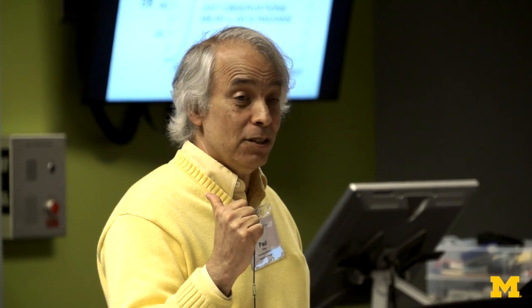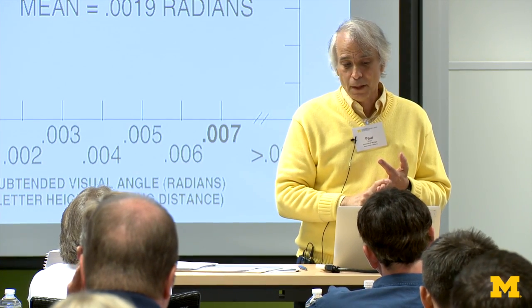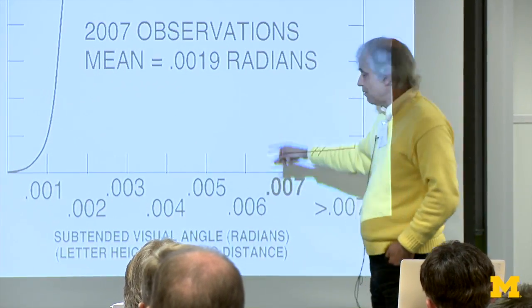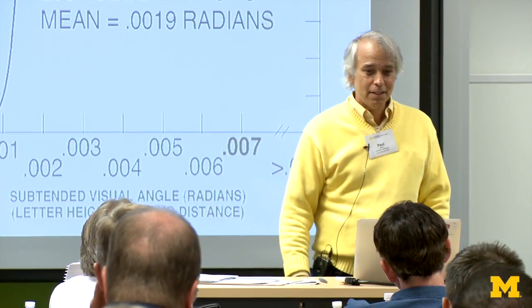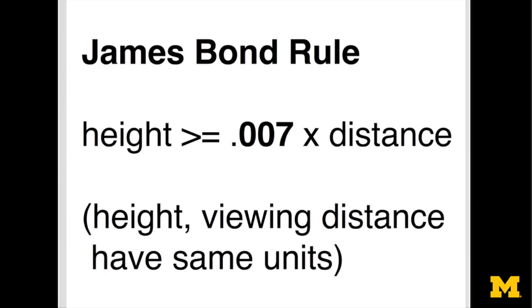This has led to what's known as the James Bond Rule. Take the distance, multiply it by 0.007, and if you're at least that big, you can be reasonably comfortable that across a wide range of viewing conditions and for a wide range of viewers, people can see it. The James Bond Rule — I like it because you can memorize it.